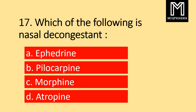Question number 17. Which of the following is a nasal decongestant? Option A ephedrine, B pilocarpine, C morphine, D atropine. Correct answer: Option A ephedrine.